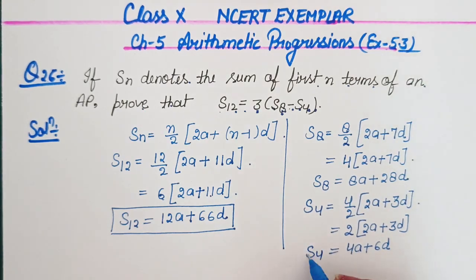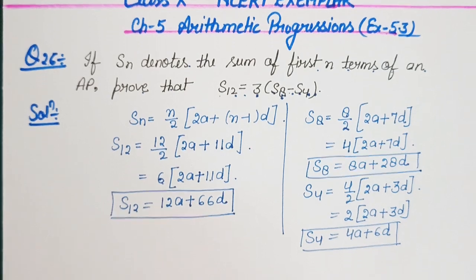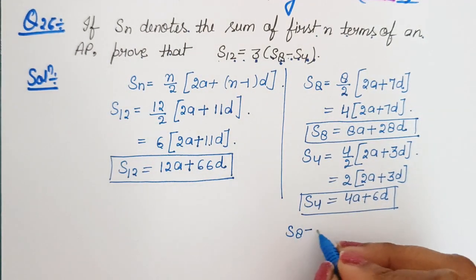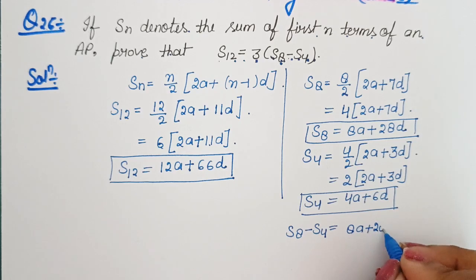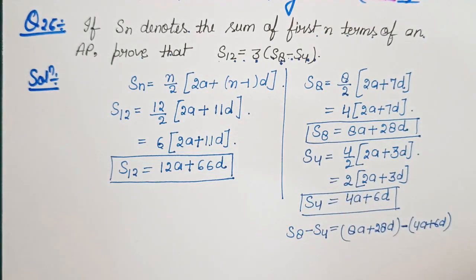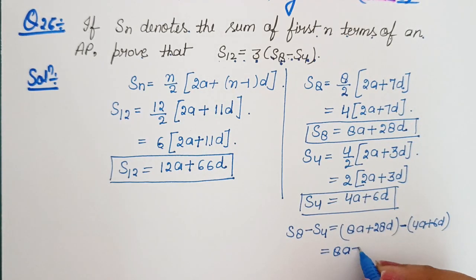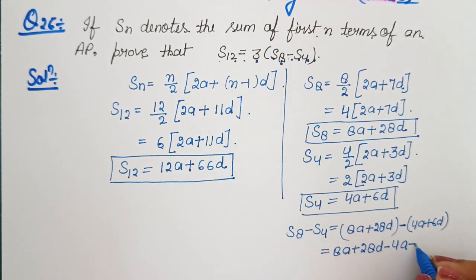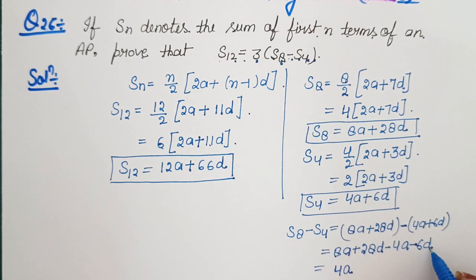We have the value of S4 and the value of S8. Now we will find the difference — what is the value of S8 minus S4. We have 8A plus 28D minus which is 4A plus 6D. So 8A plus 28D minus 4A minus 6D: 8A minus 4A gives 4A, and 28D minus 6D gives 22D.